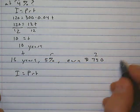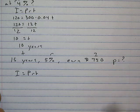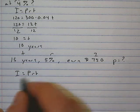So I equals PRT. We are given the interest, we're given the rate, we're given the time, so we're looking for P.